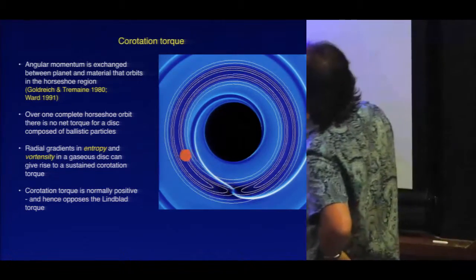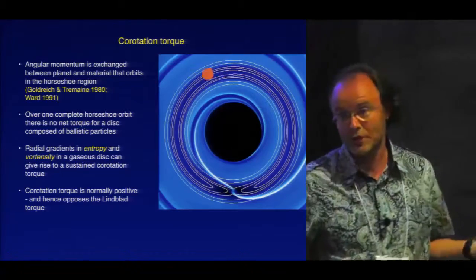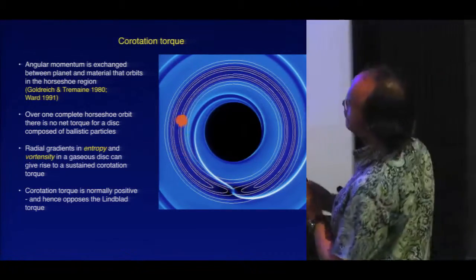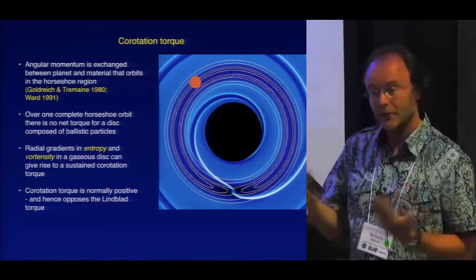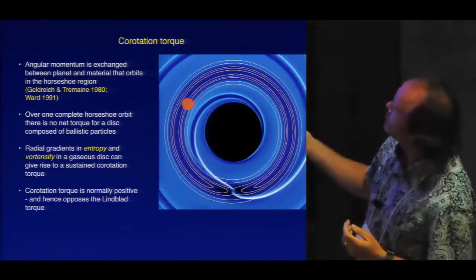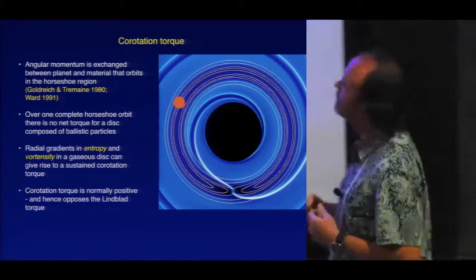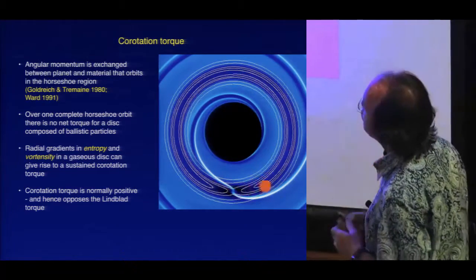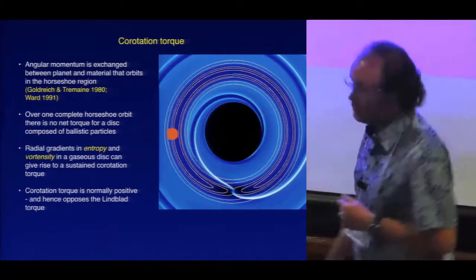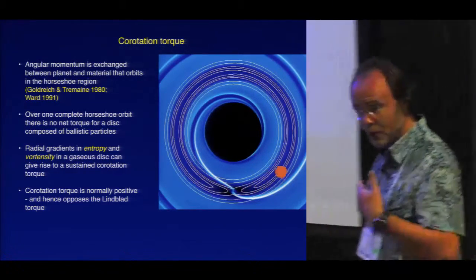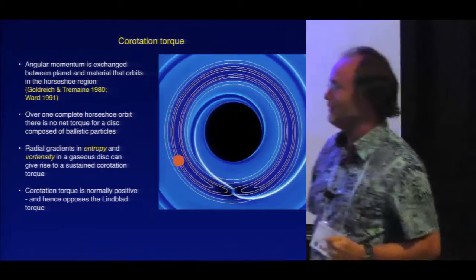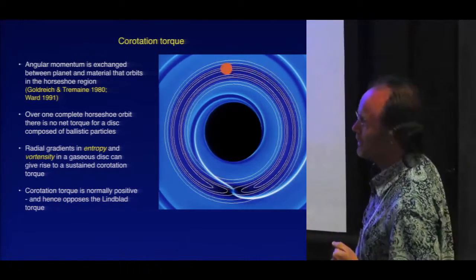If you consider just ballistic particles and average the angular momentum exchange over one cycle, you end up with no net change. But in a gas disk, you can have entropy gradients and also a gradient in a quantity called the vortensity — which is the vorticity of the gas divided by the surface density. These gradients allow you to obtain a sustained co-rotation torque, a torque which operates in this region of the disk and is sustained over a long time period. The co-rotation torque is normally positive, and therefore it opposes the very rapid migration associated with the Lindblad torque. So it's our current best hope for stopping all of the planets in the universe from falling into their stars while they're forming.